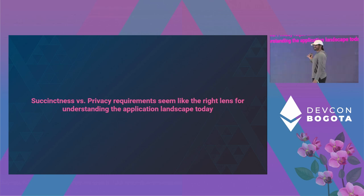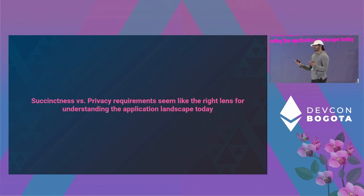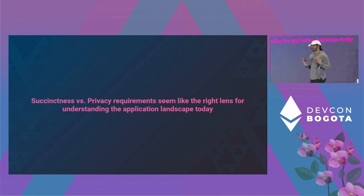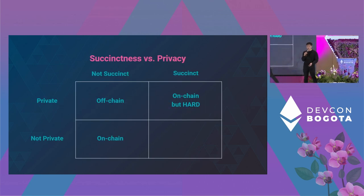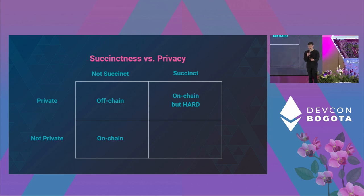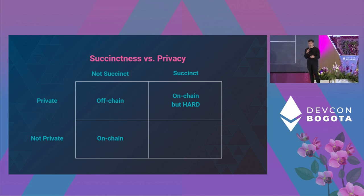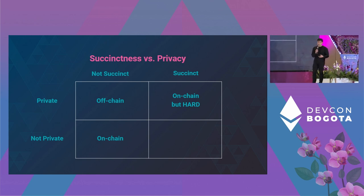If the core thesis were stated in a single statement, it's basically that succinctness and privacy are the two sort of features of ZK that are interesting. Understanding what succinct apps require and what private apps require, independent of one another, might help us understand how these two application classes exist. We really think of ZK as this matrix where your proof can be either succinct or not succinct, and either private or not private.